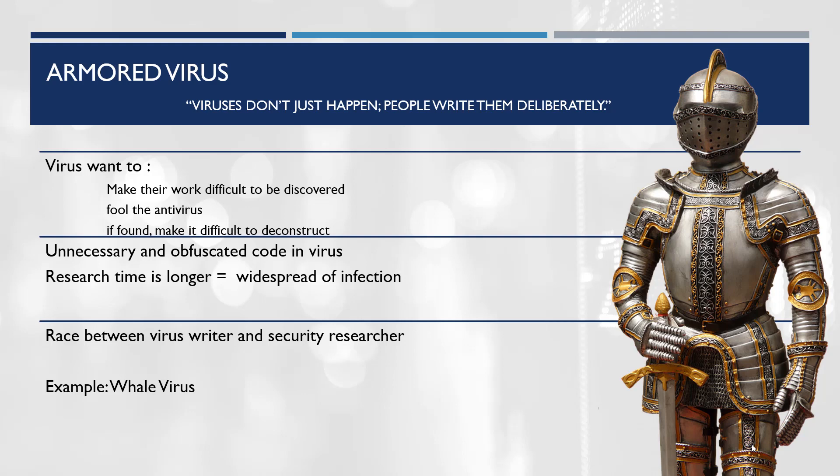To summarize, an armored virus has code with misleading logic and is large in size — just like the term 'whale' implies, as the whale is the largest mammal on earth. The whale virus is very large in size, has misleading code which is difficult to deconstruct, and is misleading for security researchers.